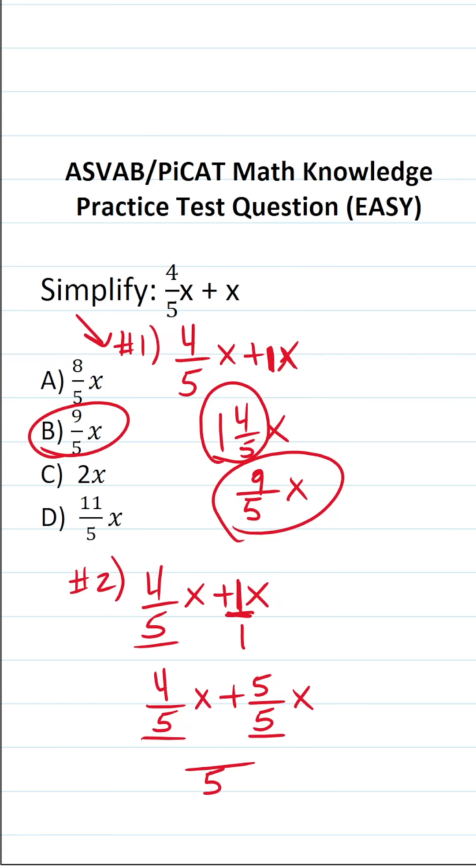Now that these are fractions with the same denominator, I can simply add them. Again, our denominator of five is not going to change. This becomes four plus five x. Four plus five is going to be nine. So this is nine over five x.